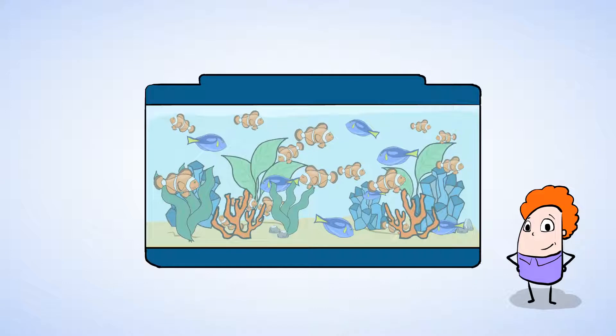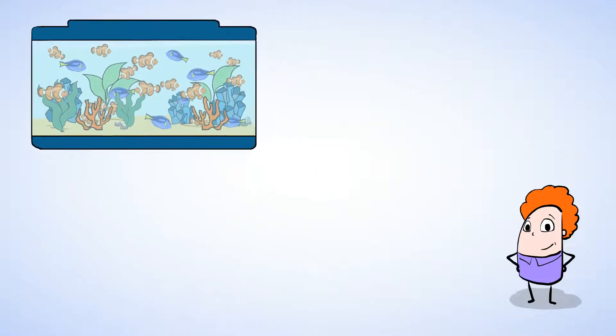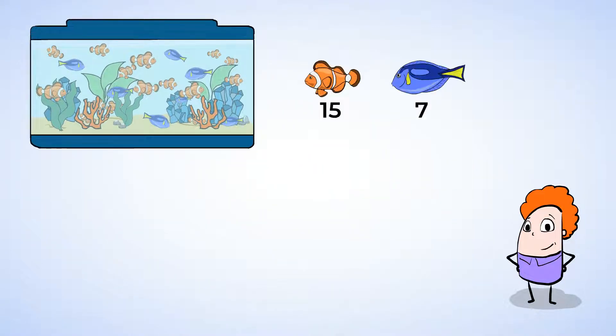This tank has two different kinds of fish. There are 15 of the orange fish and 7 of the blue fish. How many fish are in the tank in all? We can find the total number of fish by adding 15 and 7.